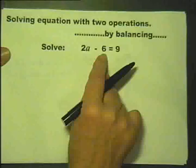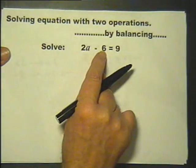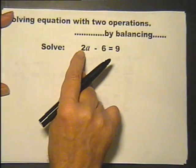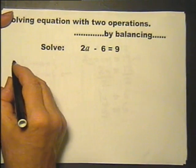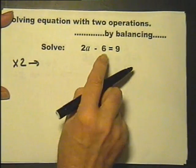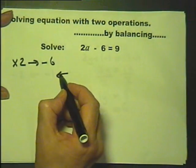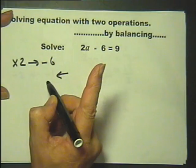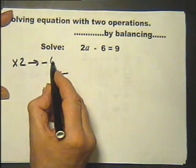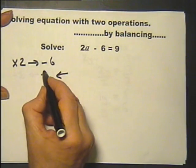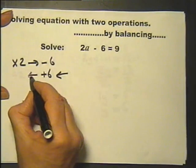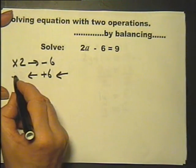Read that. 2a minus 6 what does that mean? a is multiplied by 2 and then 6 is subtracted. So I'm going to do the opposite, sorry the inverse because that's the right way of saying it. The inverse of minus 6 is plus 6, the inverse of multiplied by 2 is divided by 2. So when I read it I read it as times by 2 subtract 6.